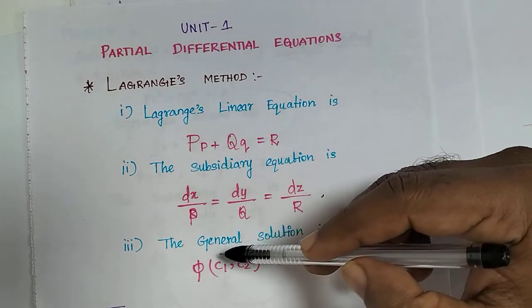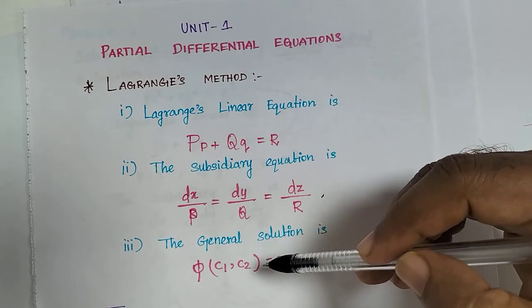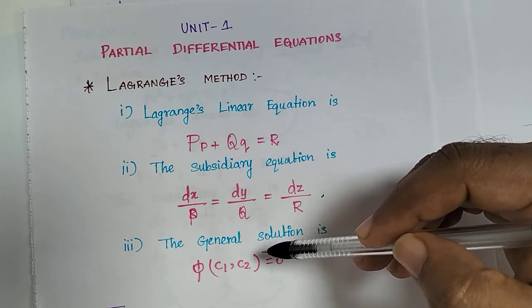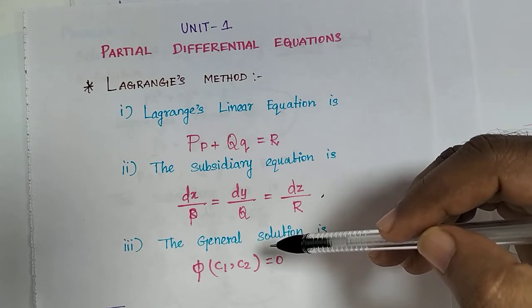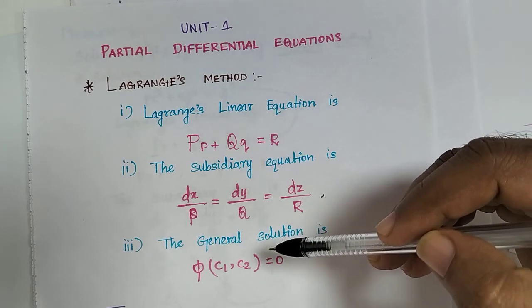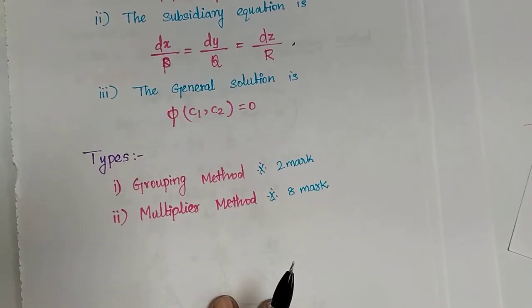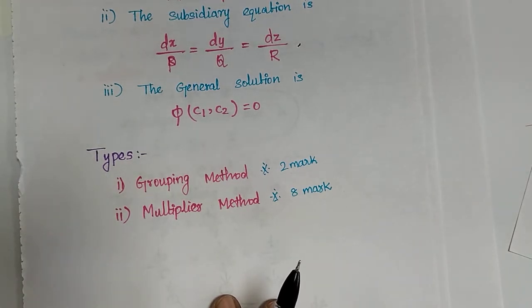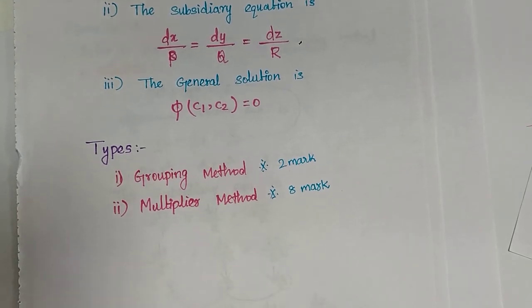After solving the subsidiary equation you get c1 and c2, which must be different values. Then write the general solution as phi of (c1, c2) equals 0, substituting those values. There are two types: grouping method and multiplier method. In this video we covered the grouping method. The next video will continue with the multiplier method. Thank you.